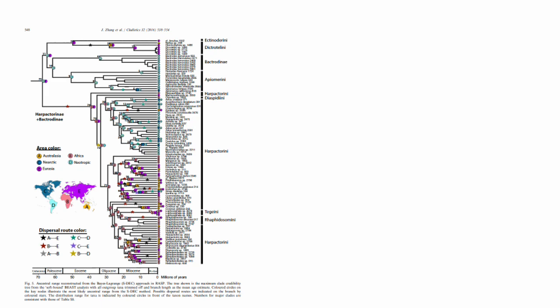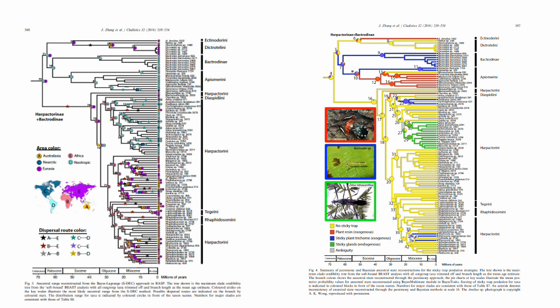A long time ago, back in 2016, Zhang et al. published a paper where they looked at the global pattern of sticky trap use in assassin bugs. Here you can see the stickiness mapped onto the tree: in yellow, those that don't use sticky predation; in red, those that gather plant resin; in blue, those that scavenge on plants with sticky trichomes; and in green, the lucky ones that make their own sticky substance.